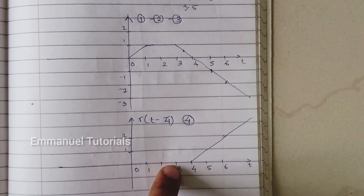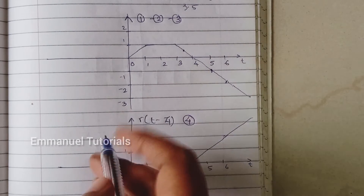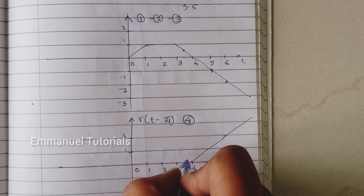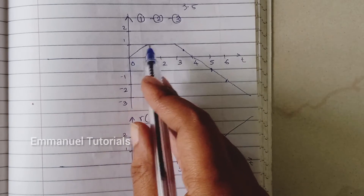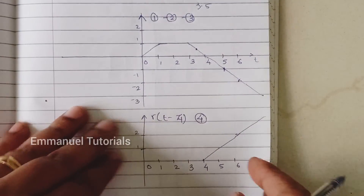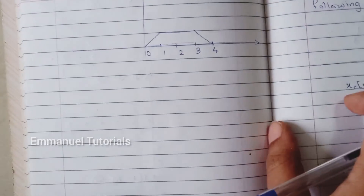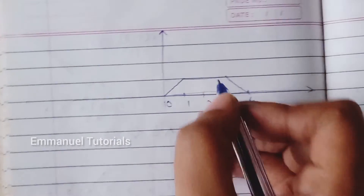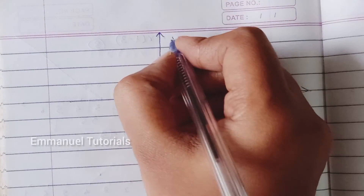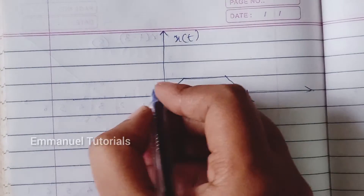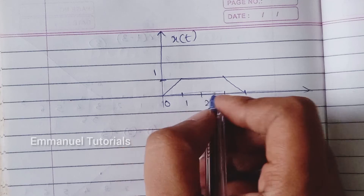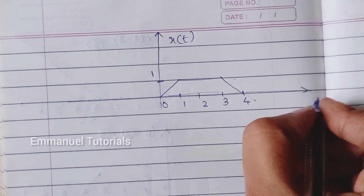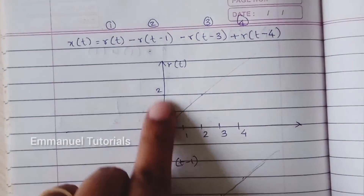So when adding these two signals, from 4 to infinity the value is 0, and from negative infinity to 0 it is also 0. From 0 to 4 we draw the first signal as it is. This is our resultant signal x(t): maximum amplitude is 1, with a ramp, then a step, then a decreasing ramp — which is exactly the signal we were expecting.